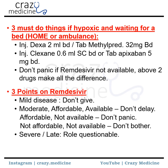Then, three points to remember for remdesivir. For mild disease, don't give remdesivir. For moderate disease where the patient is affordable and the drug is available, don't delay treatment. If the patient is affordable but it is not available, try to make it available and don't delay once it is. If the patient is not affordable and the drug is not available, don't bother — as discussed, steroids and anticoagulation matter the most. For severe or late presentation, the role of remdesivir is questionable.